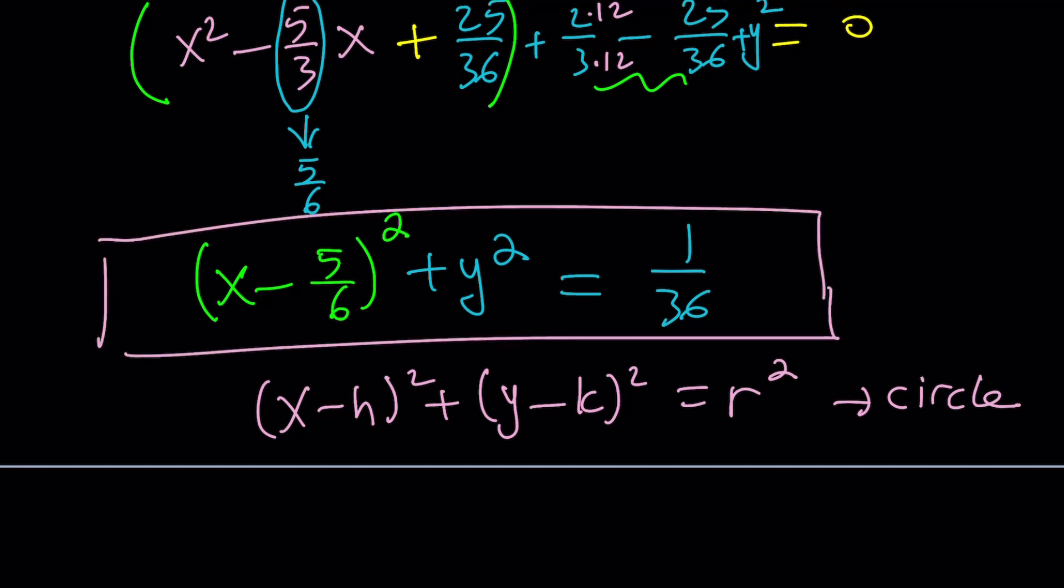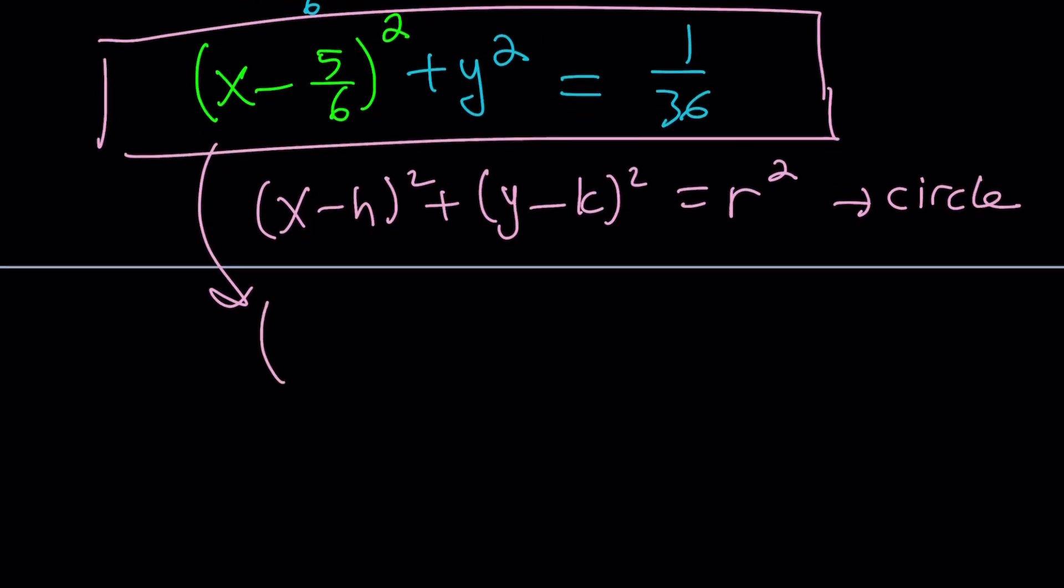What kind of circle are we talking about? A circle with center 5 over 6, 0. This is the center. And the radius is 1 over 6 because radius must be squared. So that's the locus. It's a circle, but let's go ahead and take a look because there's something interesting about this circle.